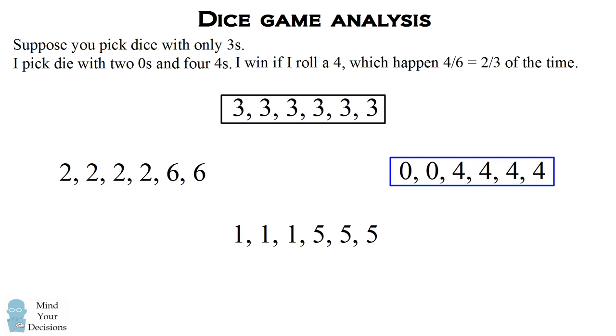However, in the four out of the six times that I roll a four, I'm actually going to beat you. So I'm going to beat you two-thirds of the time. So if you pick a dice which has all threes, you're going to lose to me two-thirds of the time.